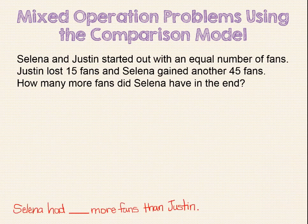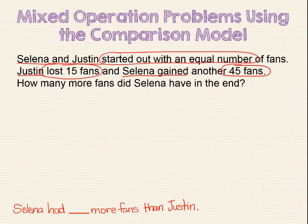When re-reading the problem, we identify the important information we need to solve the problem. Since we are told that Selina and Justin started out with an equal number of fans, we can show that with equal sized bars. Next, we are told that Justin lost 15 fans. We can show that loss by marking off a piece representing the lost fans and drawing a line through it to indicate that it is a subtraction from the starting amount. This yellow portion represents Justin's remaining fans.